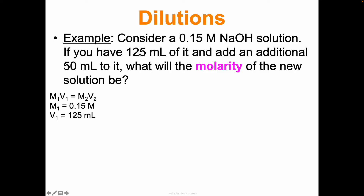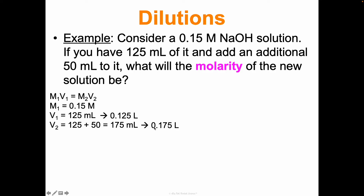I'll go ahead and convert 125 milliliters to liters right away because it has to be in liters - 125 divided by 1000 gives 0.125 liters. For volume two: we have 125 mL and add an additional 50 mL, so the new total volume is 175 milliliters. Dividing by 1000 gives 0.175 liters. We want to find M2 - the new molarity after adding that extra solvent.